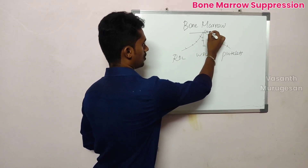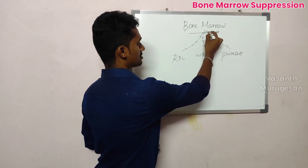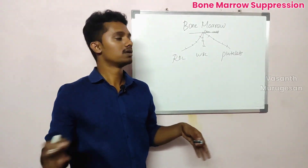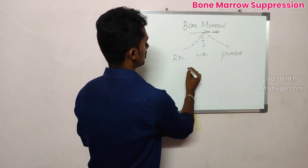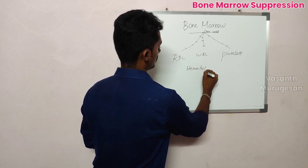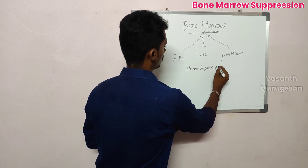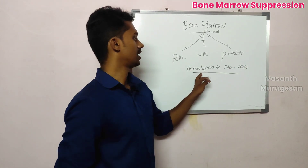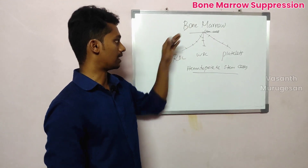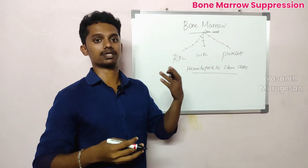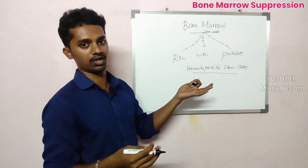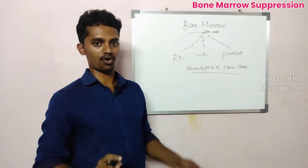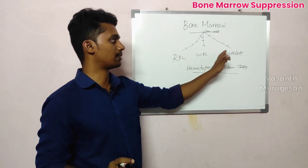Here are stem cells. Stem cells produce RBC, WBC, and platelets — three cells. The first major cell type is hematopoietic stem cells. These are myeloid stem cells. Hematopoietic — the first cell — they are myeloid stem cells. Overall, the RBC, WBC, and platelets are produced.